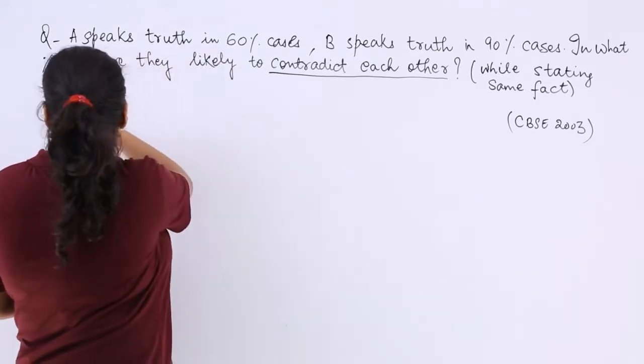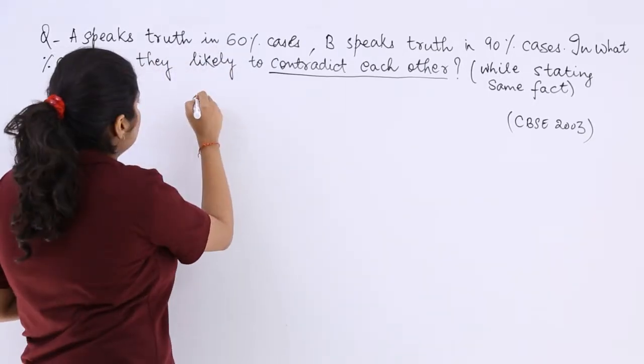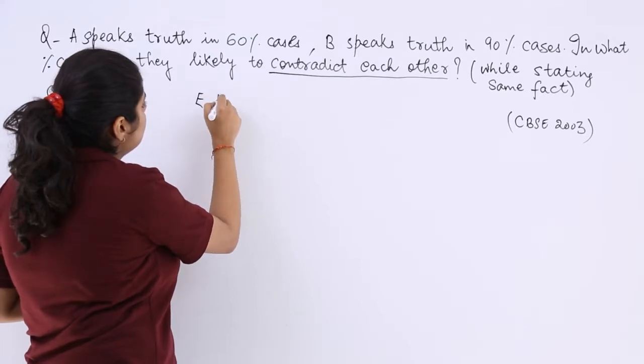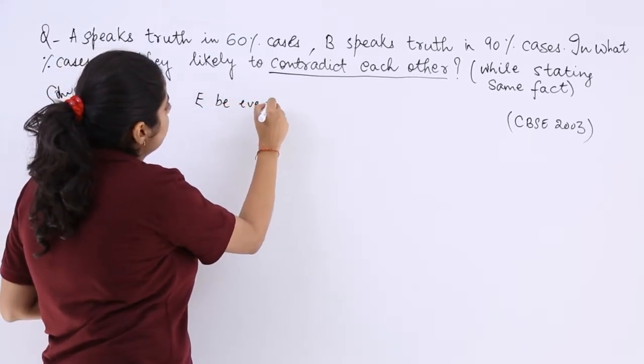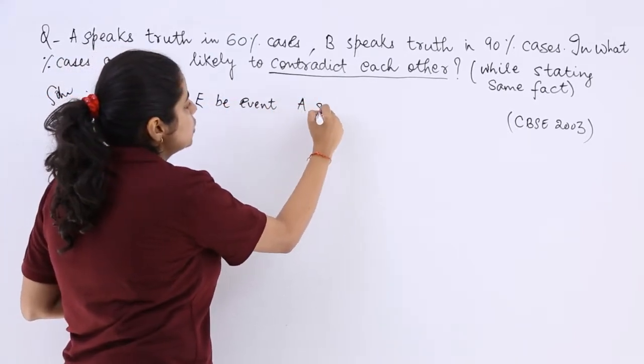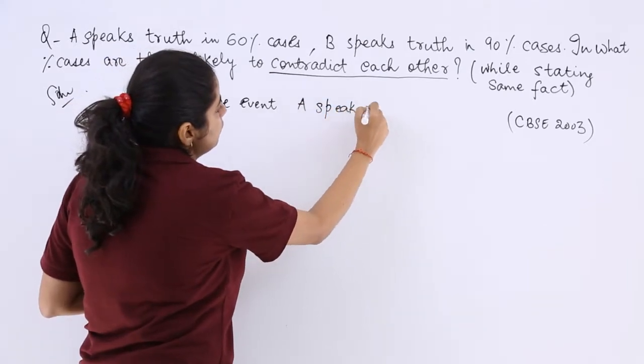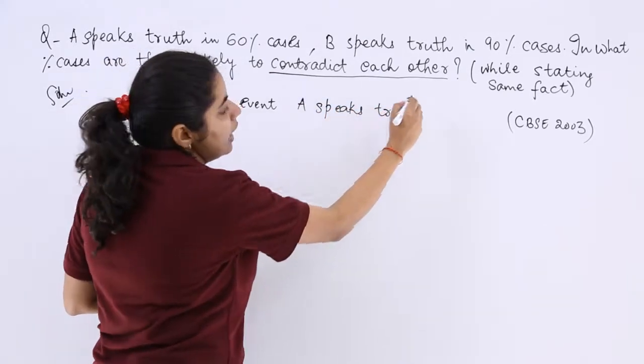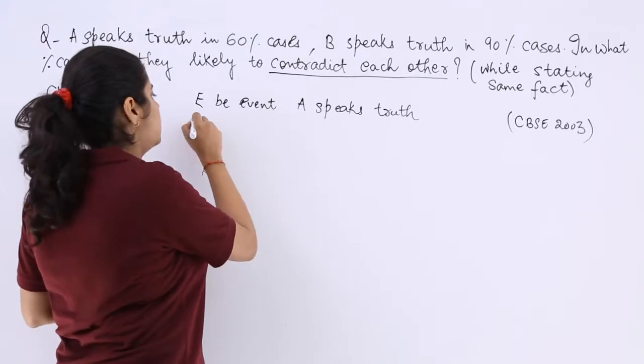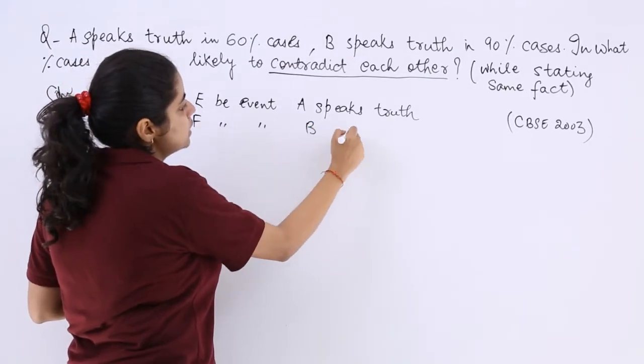So I write solution. Let E be the event A speaks the truth. And let F be the event B speaks truth.